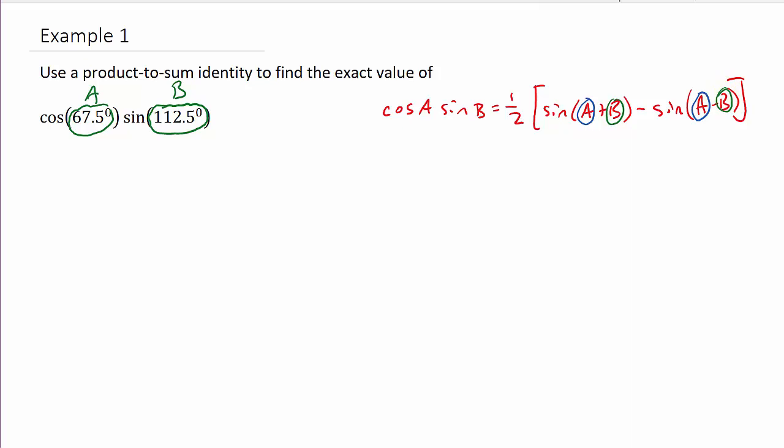And then we simplify it. All right, so this is going to be one half, and that's going to be the sine of a plus b. So that's 67.5 plus 112.5 minus, and then we plug the a and b in here, sine 67.5 minus 112.5.